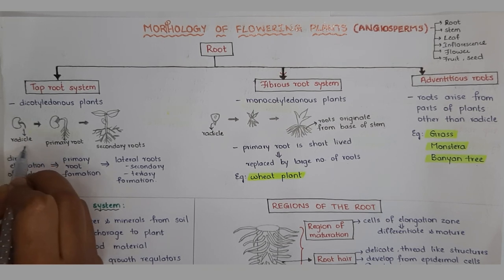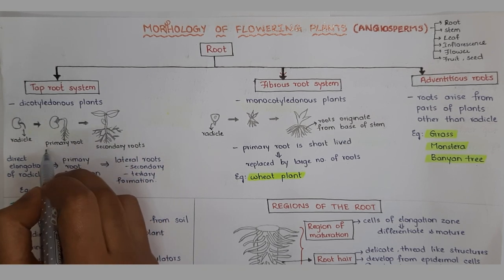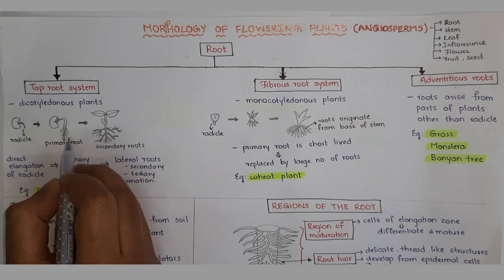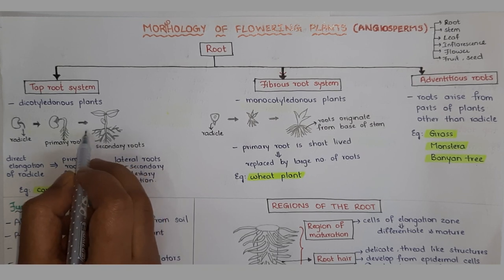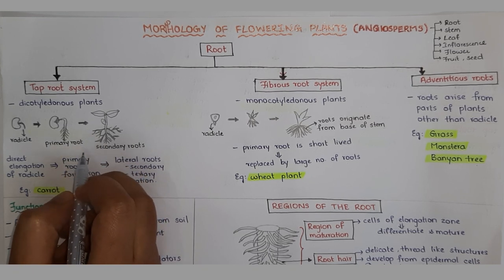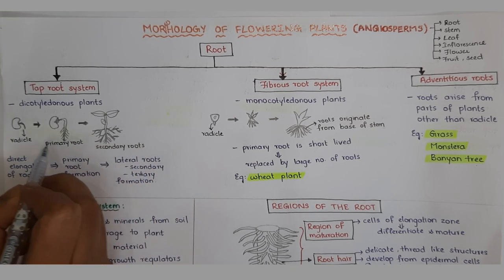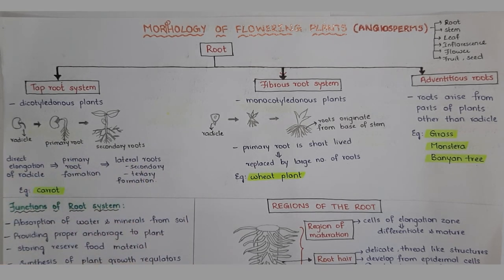All roots are formed from the radicle with some exceptions. From the radicle, direct elongation occurs, leading to the formation of the primary root. This primary root in turn gives branches called secondary roots. These secondary roots give further branches called tertiary roots. The secondary and tertiary roots together are called lateral branches. The primary root and its branches together constitute the tap root system.